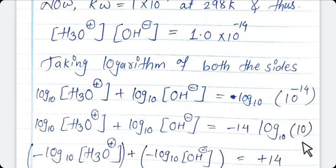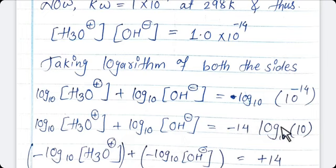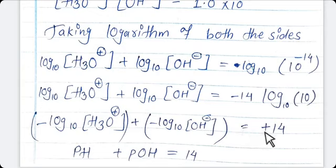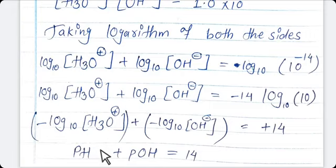Since log₁₀(10⁻¹⁴) = −14, we multiply the whole equation by −1. We get: −log₁₀[H3O⁺] + (−log₁₀[OH⁻]) = 14. Now, −log₁₀[H3O⁺] is pH and −log₁₀[OH⁻] is pOH. Therefore, pH + pOH = 14. That is the relationship between pH and pOH.